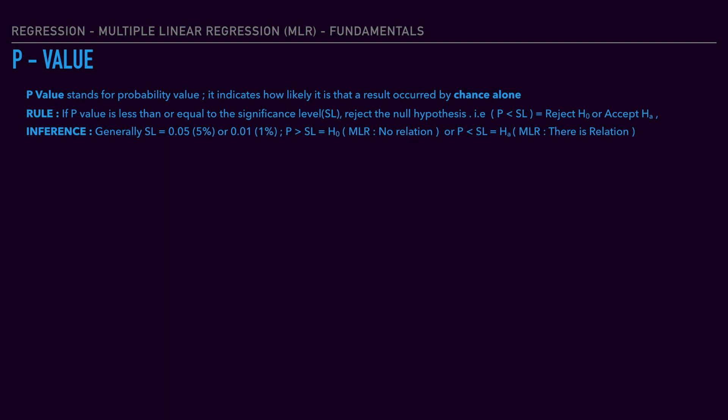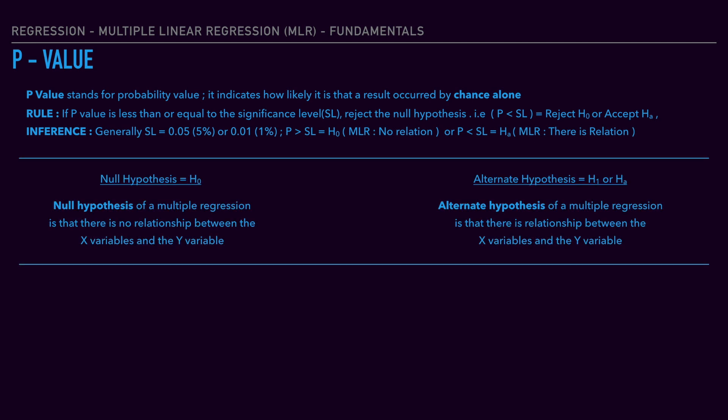If the probability value is less than or equal to 0.05, we reject the null hypothesis and accept the alternative hypothesis. If the P-value is greater than the significance level, then we accept the null hypothesis. The null hypothesis is represented as H0, and the alternate hypothesis is represented as H1 or HA.